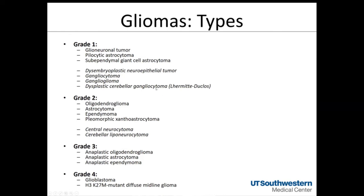Lhermitte-Duclos is not a glioma, neither is the DNET or the gangliocytoma, but it's important to have in this discussion because in the radiographic differential you'll often have these entities alongside a couple of others, so you'll want to know how to address those.